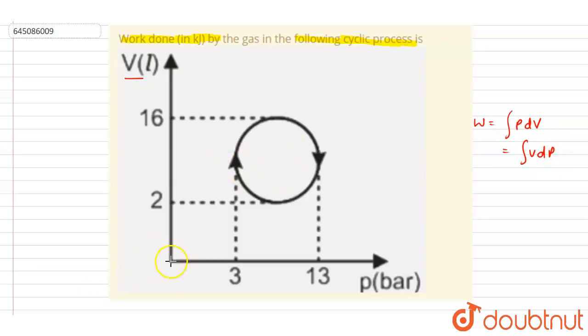It is having symmetry about this y equals x line. It is having a symmetric structure about this line, so basically the work done will be area under VP curve also.